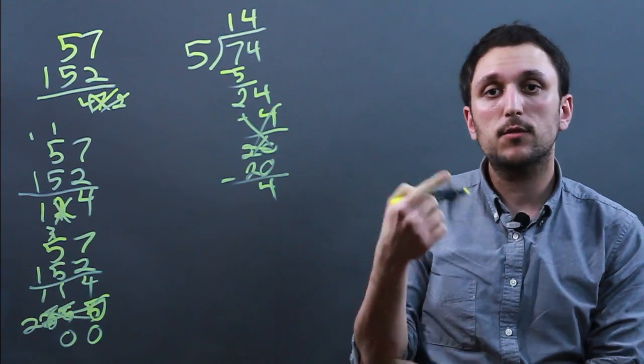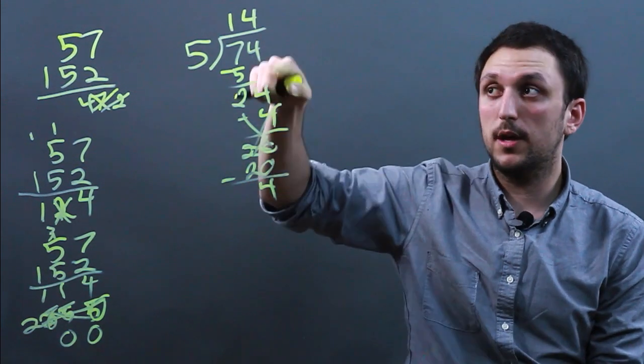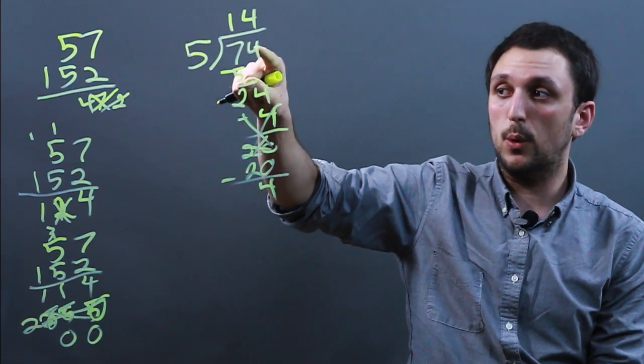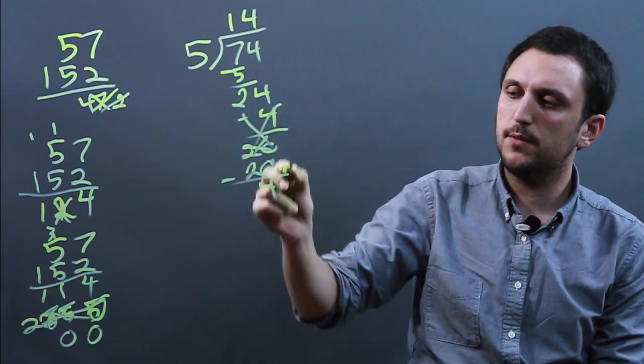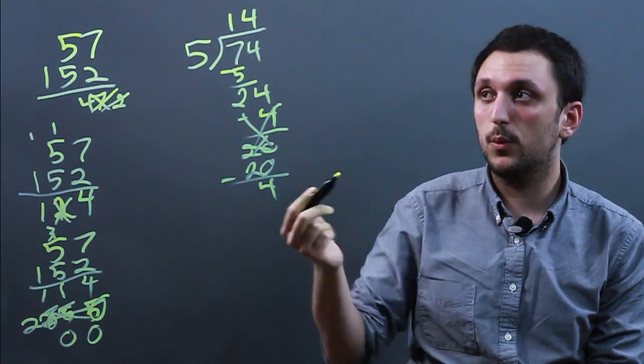Now the next basic error in division comes at this point. So 5 goes into 74. Well, we've run out of things to drop down. So we now have 5 goes into 4. Well, it doesn't. So we have to drop down to 0.